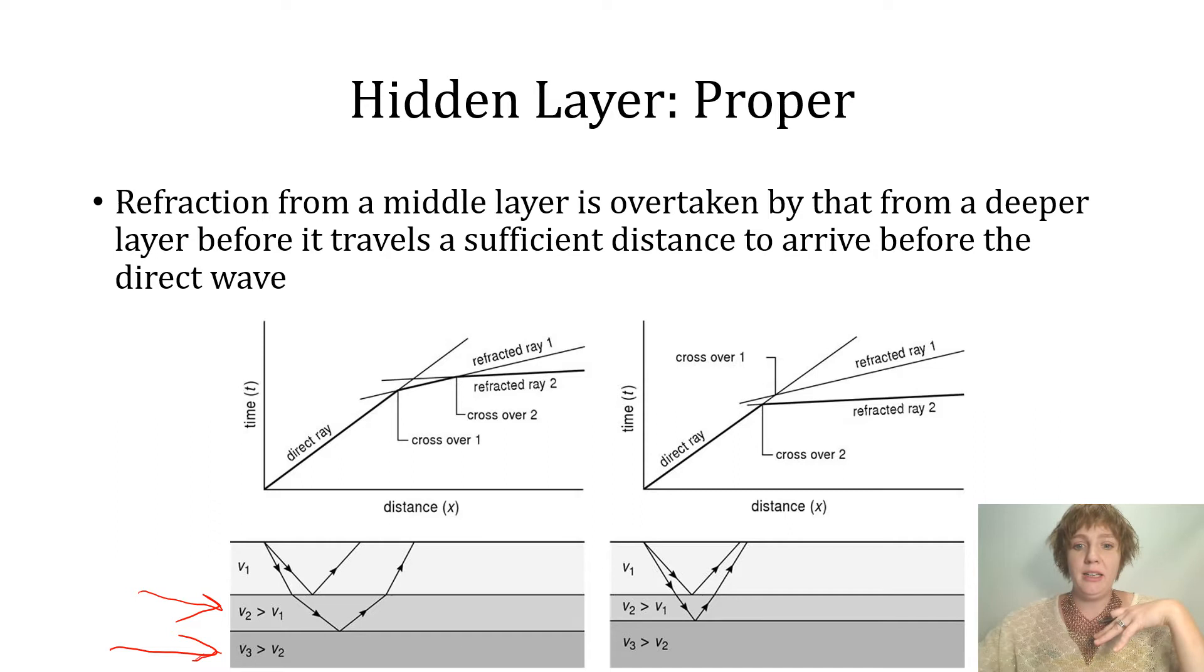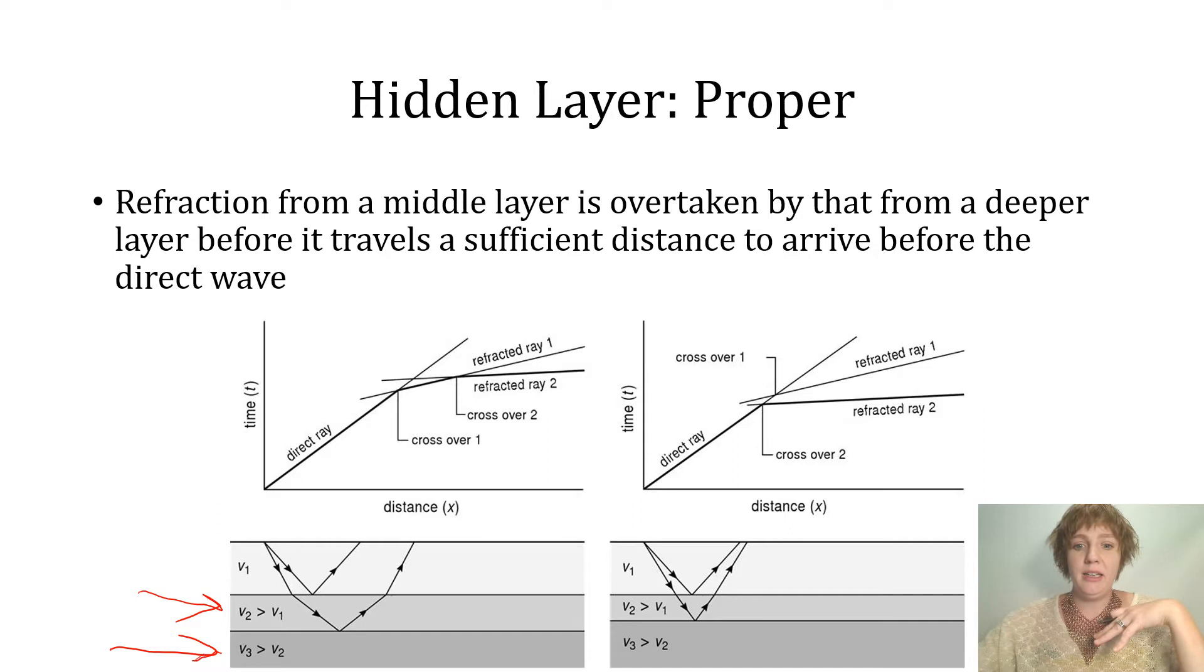So the depth calculated to the top of what you think is the apparent layer, what you think is the second layer, because the true second layer is completely invisible to you, is going to be somewhere between the true depth of the top of layer two and the true depth at the top of layer three.